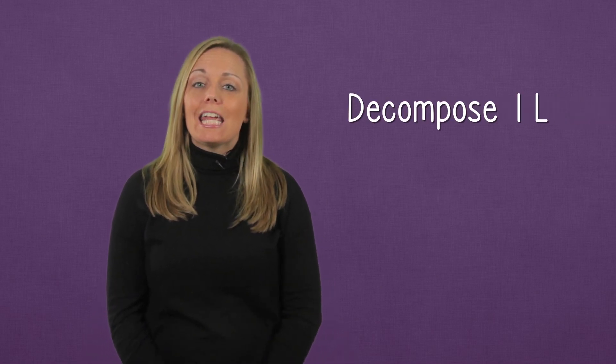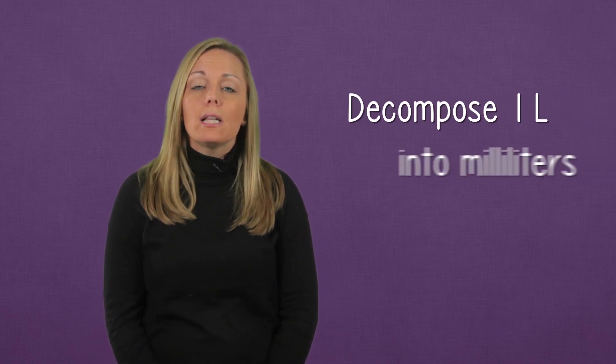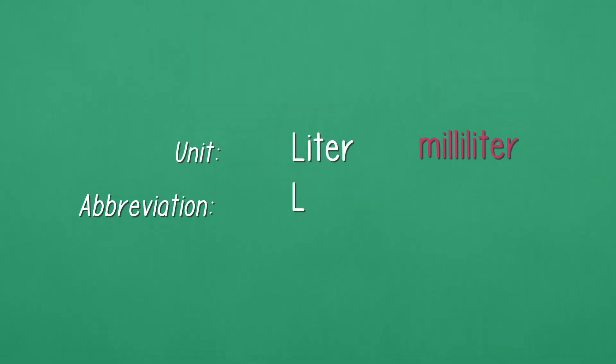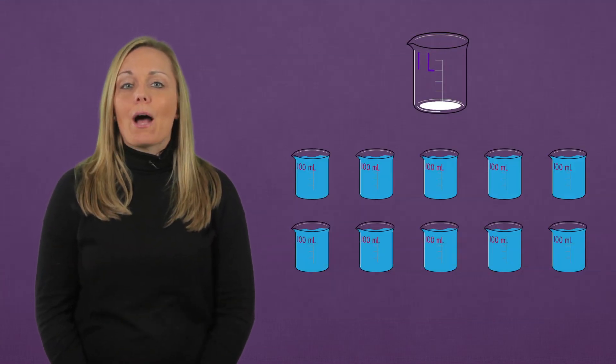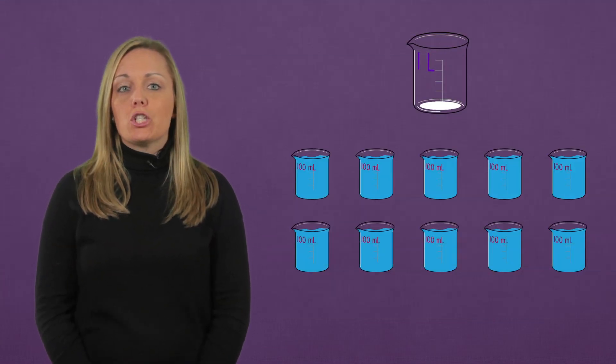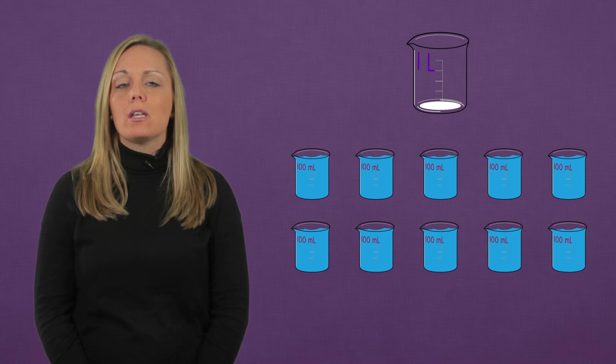Now, let's decompose our liter into 10 equal units of a smaller measurement called milliliters. We abbreviate milliliters as a lowercase m, capital L. So, here's our 1 liter, poured into 10 equal cups with none left over.